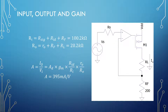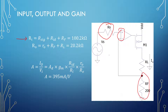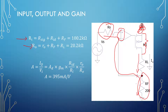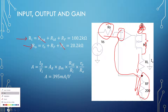For input and output impedance, everything is happening in series. So Rin equals Rsig plus Rid plus Rf. The output impedance is the output impedance of the transistor plus the load plus Rf. With Rsig = 0 and Rload = 0, this gives us Rin = 100.2 kΩ and Rout = 20.2 kΩ. Those are our impedances.